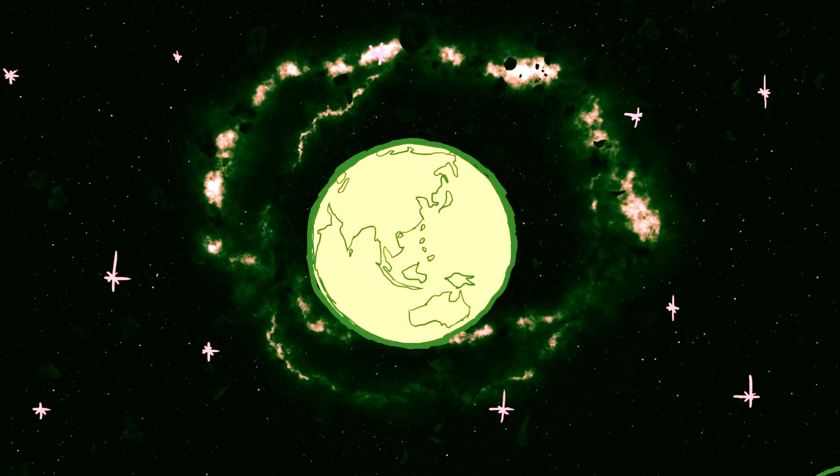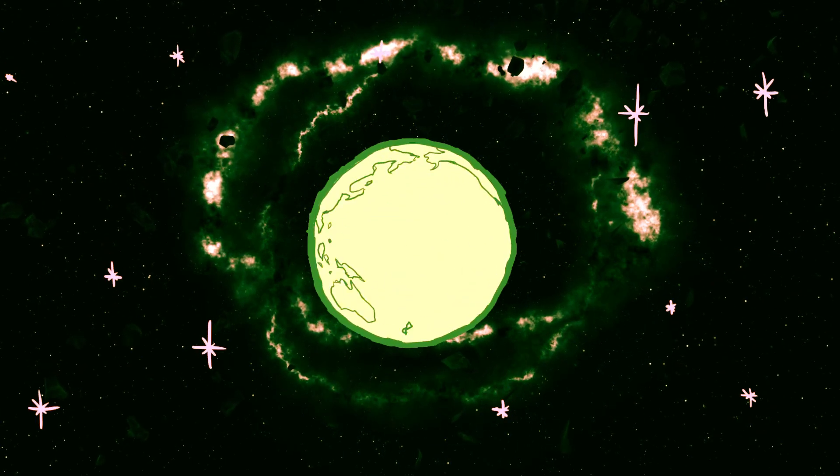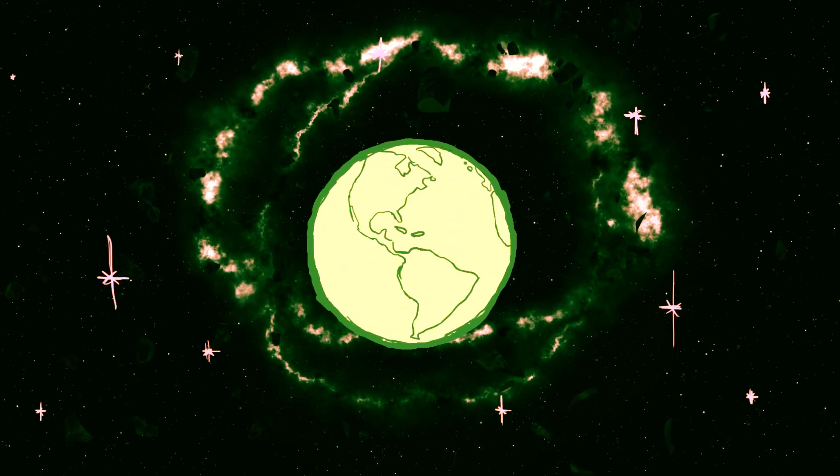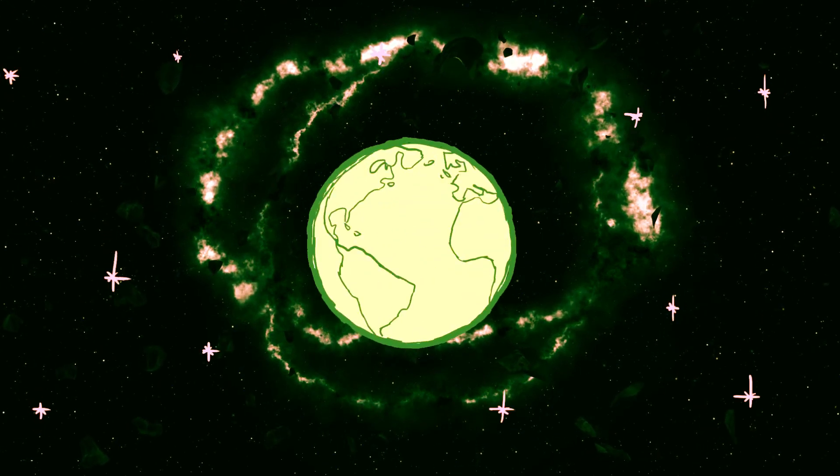The early Earth was likely formed through a process of collision and accretion between these planetesimals and protoplanets, which eventually grew to form the Earth we know today.